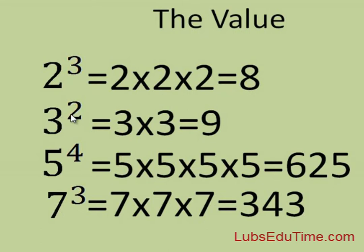3 to the power of 2 is not 3 times 2, but 3 times 3 — twice. 3 times 3 is 9. Likewise, 5 to the power of 4 is 5 times 5 times 5 times 5. 5 times 5 is 25.